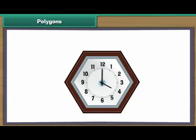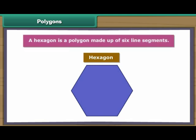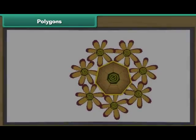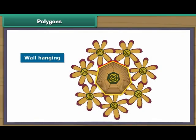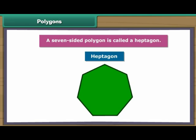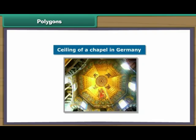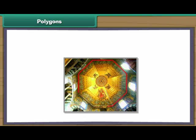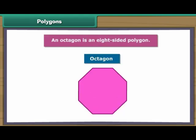Here is a clock. Let us provide its borders. We have a border of six line segments for the clock. A hexagon is a polygon made up of six line segments. Let us create a wall hanging using seven straws — the rainbow wall hanging with seven line segments is ready. A seven-sided polygon is called a heptagon. This is the ceiling of a chapel in Germany; it has eight sides. An octagon is an eight-sided polygon.